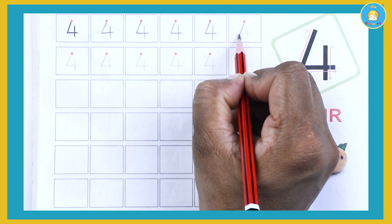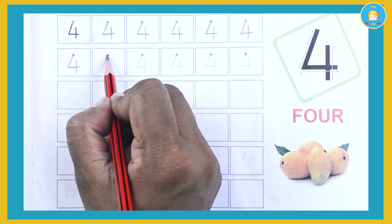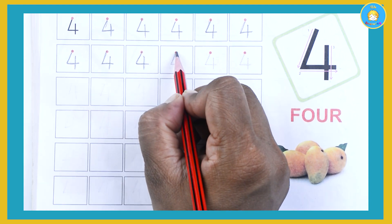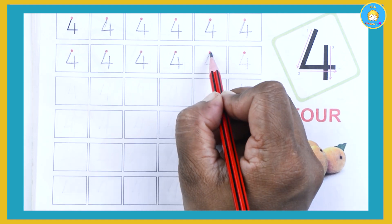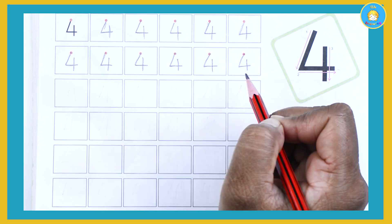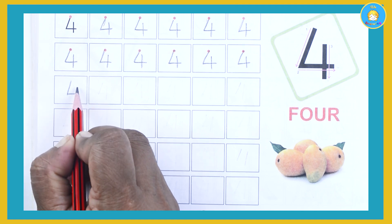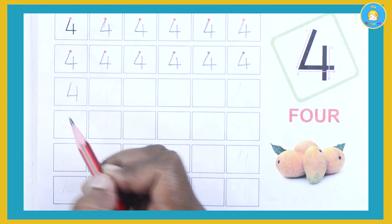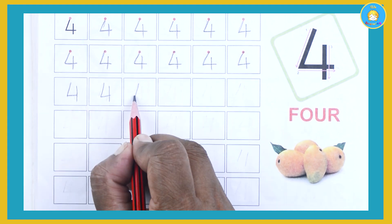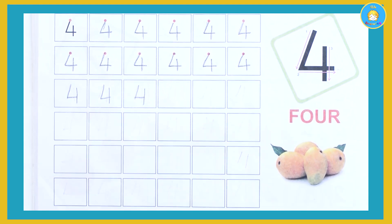Make number 4. One sliding line, one sleeping line and standing line. It's number 4. One sliding line and sleeping line and connect to the standing line. It's number 4.